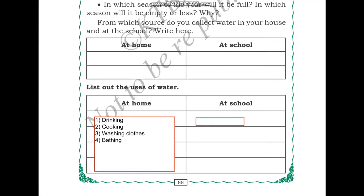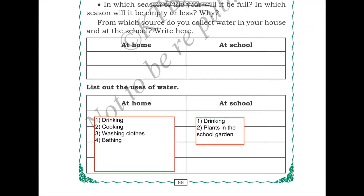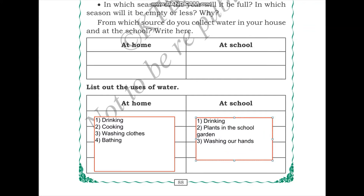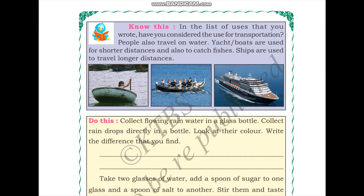When we think about the uses of water at school, we use water for drinking. If there is a garden in your school, water is used for the plants. Water is also used for washing our hands in the washrooms and at the hand sinks. If you can think of other places where water is used in your school, you can add them to this list as well.